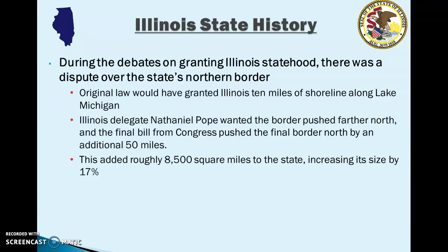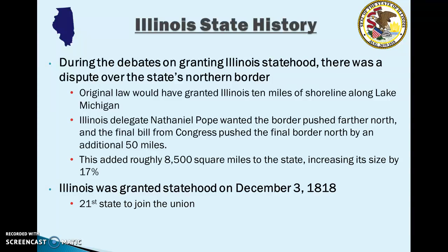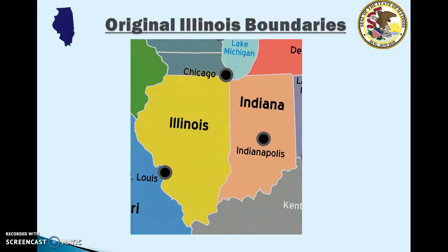The final bill that Congress passed pushed the border of Illinois north by an additional 50 miles, adding roughly 8,500 square miles to the state — increasing Illinois's size by 17%. That's a big chunk of the state that originally was not going to be part of Illinois. On December 3rd, 1818, Illinois was granted statehood as the 21st state to join the Union. In the map, the yellow area was the original proposed territory and the blue area above it was added thanks to Nathaniel Pope and other delegates.